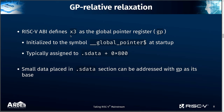The other kind of relaxation is GP-relative relaxation. The ABI defines the X3 register as a dedicated global pointer register, which we call the GP. The value of this register is initialized to the symbol underscore global pointer dollar sign as a base, and it remains unchanged during execution. This symbol is typically assigned to the start of the data section plus a 2-megabyte offset. This means that any stored data placed in the data section can be addressed by GP as the base register plus a 12-bit offset.